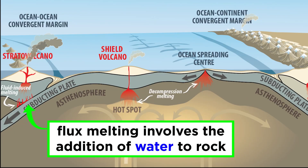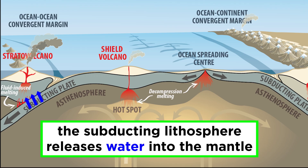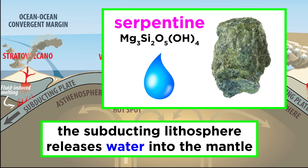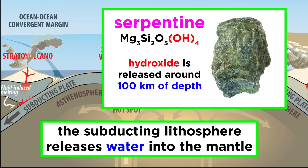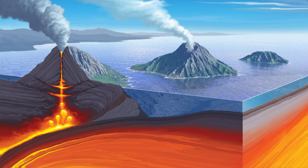Flux melting involves the addition of water to mantle rock, which lowers its melting point. This is responsible for the volcanism at subduction zones. Here, the subducting oceanic lithosphere releases water into the mantle above it, which induces melting. It is not actual liquid water that is transported to the mantle, but hydroxide anions that are released from the high pressure breakdown of hydrous minerals, like serpentine, or MG3Si2O5OH4. This chemically bound water is released around the same depth everywhere on earth — about 100 kilometers — which explains why volcanoes occur in a line, or arc, at subduction zones.